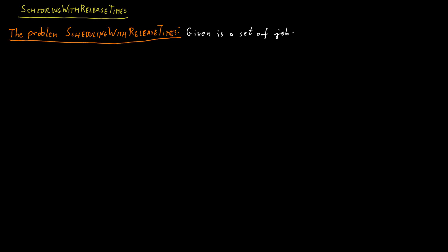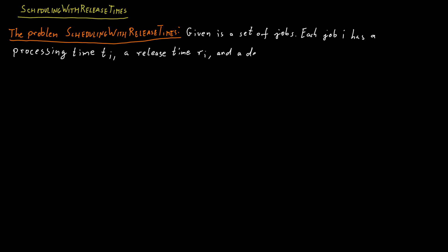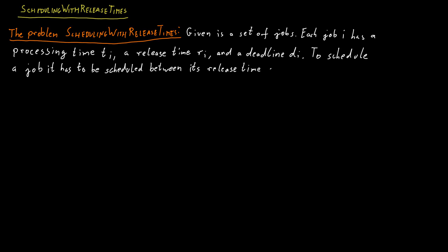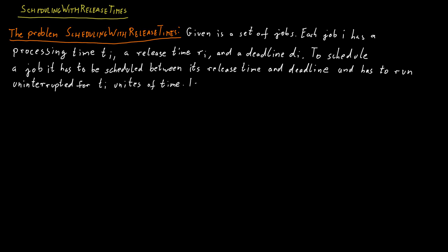In the problem Scheduling with Release Times, we are given a set of n jobs. Each job i has a processing time ti, a release time ri, and a deadline di. To successfully schedule a job, it has to be scheduled between its release time and its deadline, and it has to run uninterrupted for ti units of time. The question is whether it is possible to schedule all n jobs on a single machine.